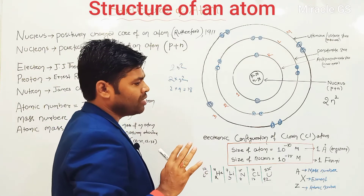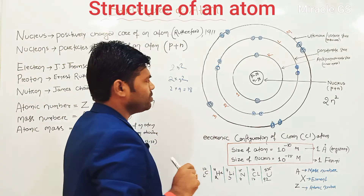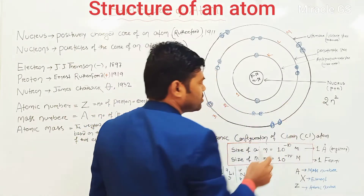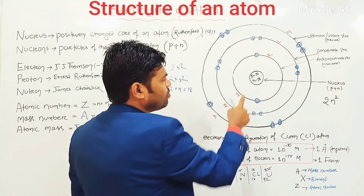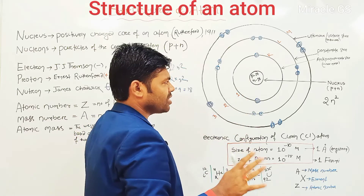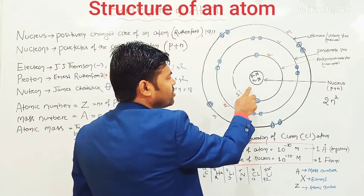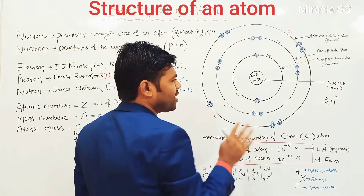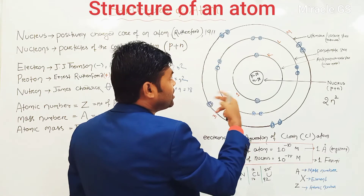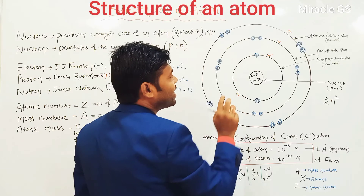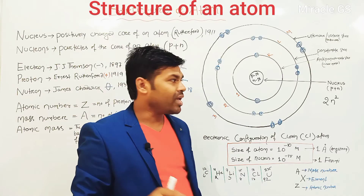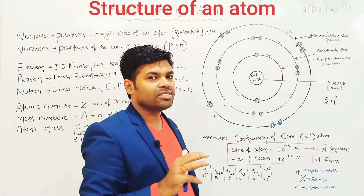Now some questions which are very important for your exam point of view. The center of the atom is called as nucleus — this is very, very, very important. A nucleus consists of both proton and neutron. Proton is positive in charge and neutron is neutral in charge. Therefore, the nucleus of the atom is positive in charge on the basis of the charge of the proton. Whereas the electron which revolves around the nucleus is negative in charge.